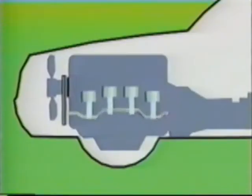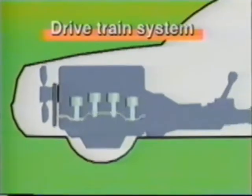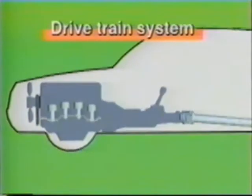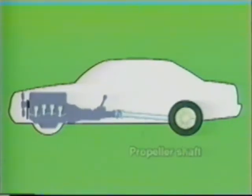The explosive power pushes down each piston causing the crankshaft to rotate. The rotary motion of the crankshaft is transmitted through the clutch and transmission system to rotate the wheels.